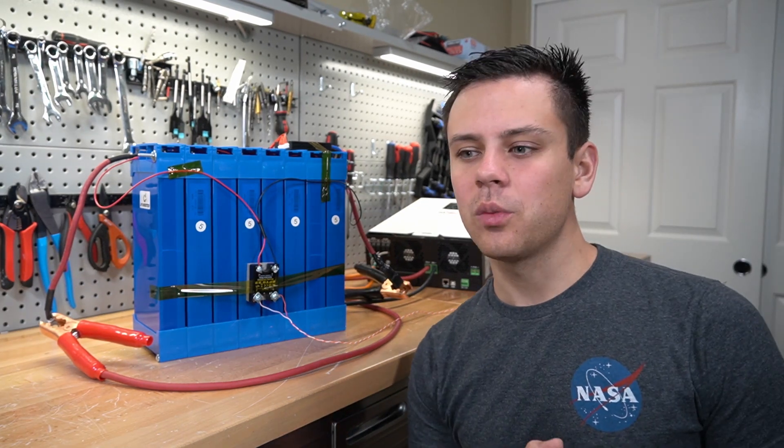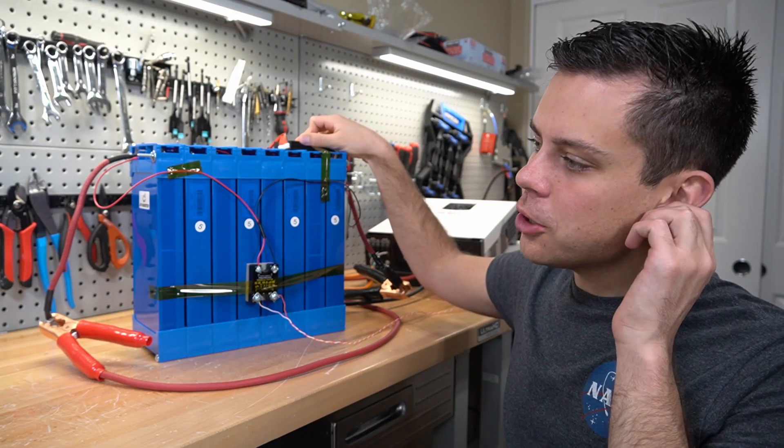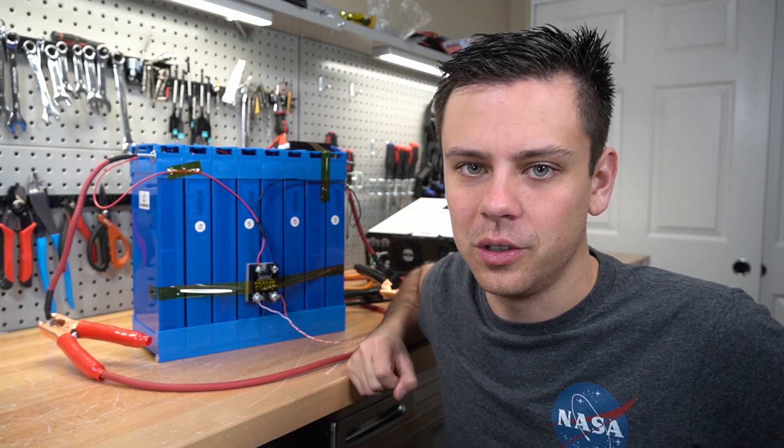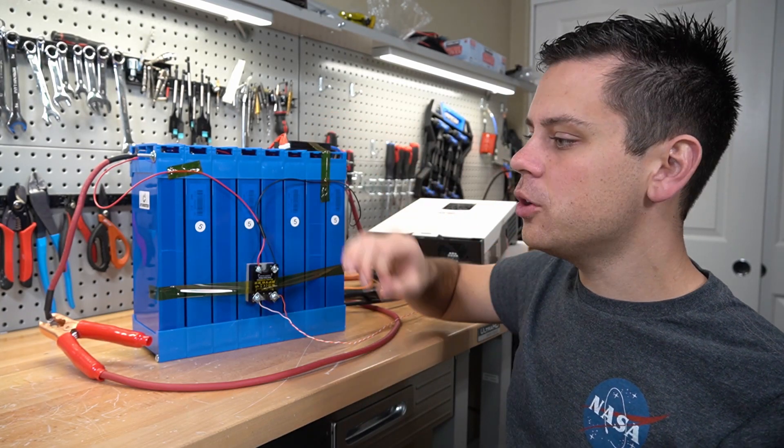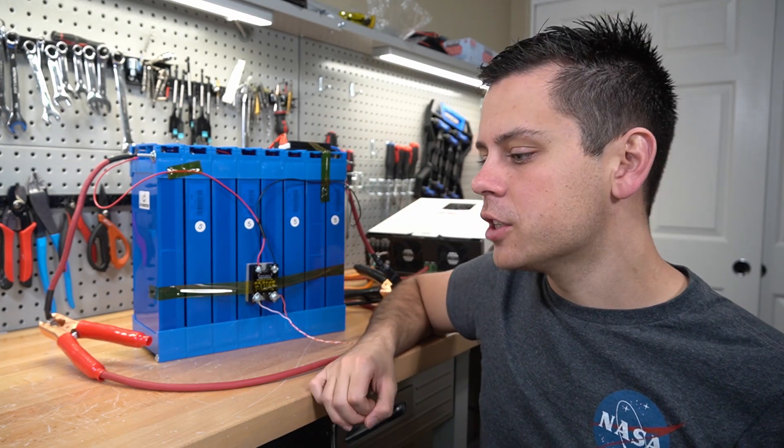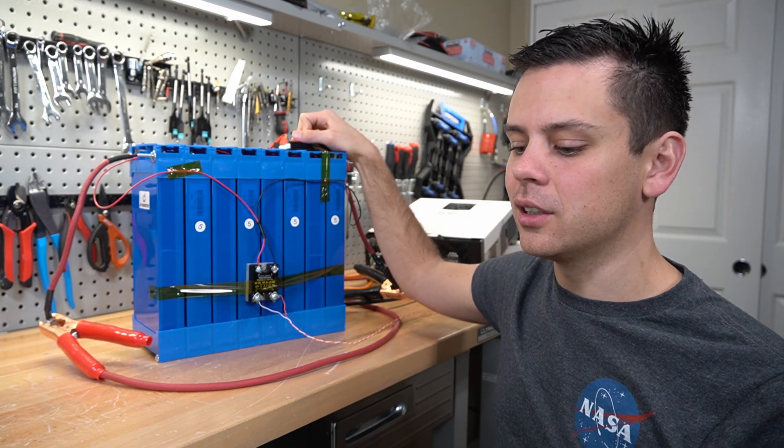I also realized that with overall system design, if you are limited by current with a BMS, you probably should be increasing your voltage. You can still use FET-based BMSs if you actually derate them properly. So let's say you have a 100 amp BMS and you want to power a 50 amp load all day long. That will work perfectly.